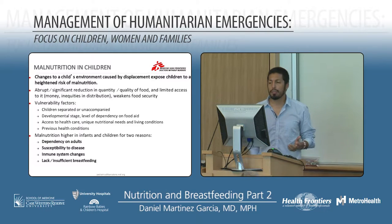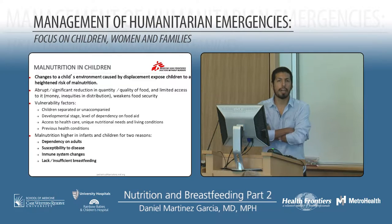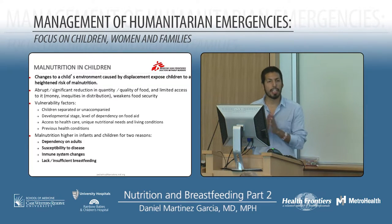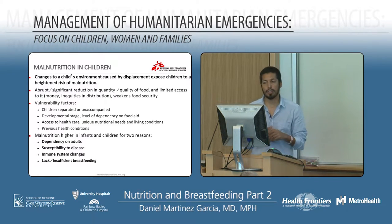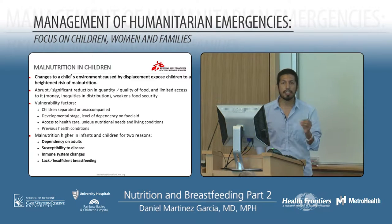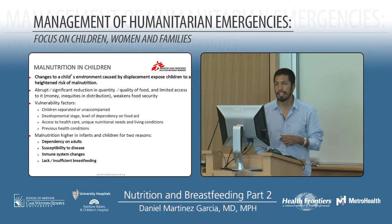Any significant change in a child's environment caused by displacement exposes the child to a large risk of malnutrition — by which I mean under-nutrition. Any significant change in the quantity or quality of food, or limited access to it, is going to weaken food security. Vulnerabilities include the child being separated from parents, their developmental stage, access to healthcare, access to specific nutritional needs, living conditions, and previous health conditions.